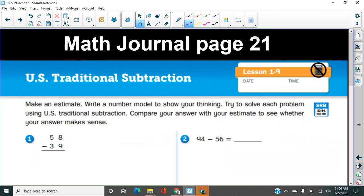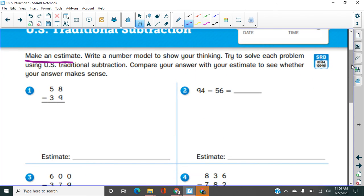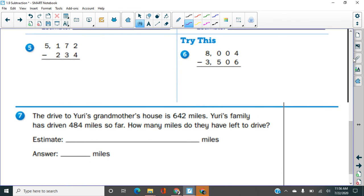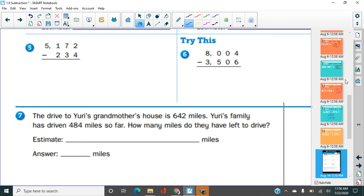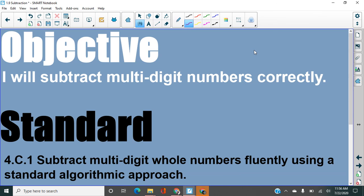So we've done a lot of practice of using this traditional algorithm. Here's the math journal page for you. Make sure that you make your estimate first. Don't do the problem and then make the estimate. That's not really the point of making an estimate. And that's going to be valuable as we move into word problems later. And then you are going to do the actual problem and compare your estimate and your real answer and see if they make sense. So you have these problems to do and then one word problem at the end. So our goal today was to be able to subtract multi-digit numbers correctly. Please reach out if you need any help with anything and good luck. Thank you.